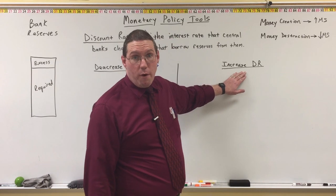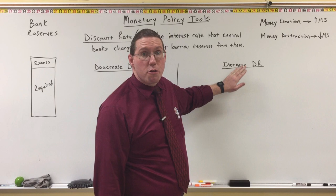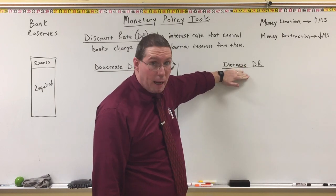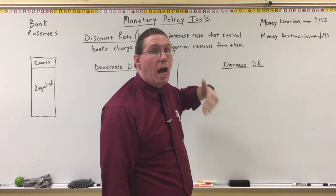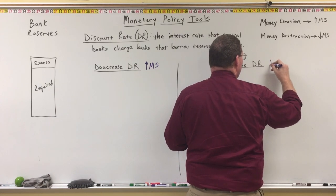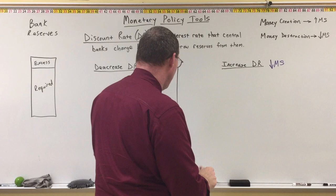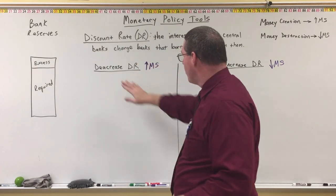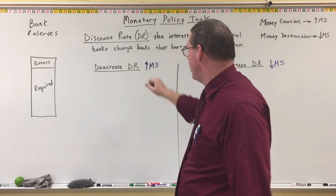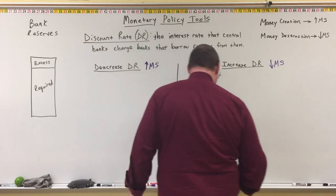An increase in the discount rate means that banks have to pay more money for what they borrow from the Fed, so they're less likely to lend more money out — they're going to lend less. When they lend less money, there's not going to be as much of an increase in the money supply. In fact, we're going to have money destruction and a decrease in the money supply. So a decrease in the discount rate generally results in an increase in the money supply, and an increase in the discount rate leads to a decrease in the money supply.